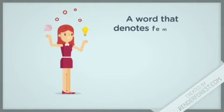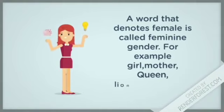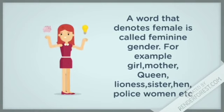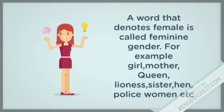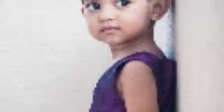A word that denotes female is called feminine gender. For example, girl, mother, queen, lioness, sister, hen, policewoman, etc. Here are some pictures of feminine gender.